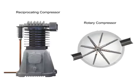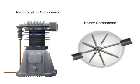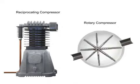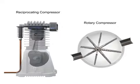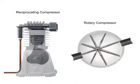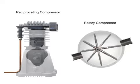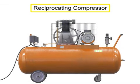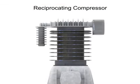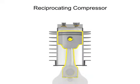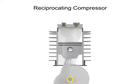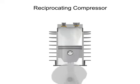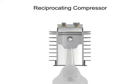Rotary compressors are typically free of the vibration and pulsation that occurs with reciprocating compressors. A typical reciprocating compressor consists of a housing with an internal piston connected to a crankshaft. As the crankshaft turns, a piston reciprocates within the cylindrical housing. There are two valves at the head of the cylinder, an inlet and an outlet.